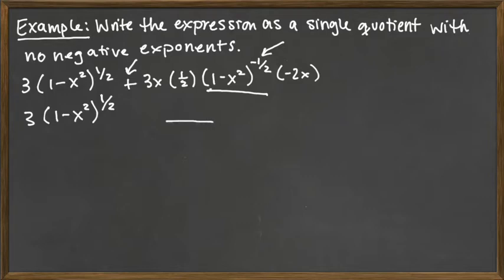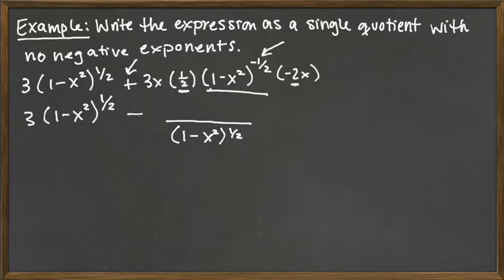What we're going to do is push that 1 minus x squared to the negative 1 half power down to the denominator, making it 1 minus x squared raised to the positive 1 half power. Then we multiply out what's left on top. We have a factor of 1 half and a factor of 2 — those multiply to give 1. We also have 3x and a negative x left over, so that gives us subtraction and 3x squared.